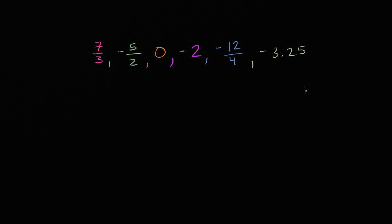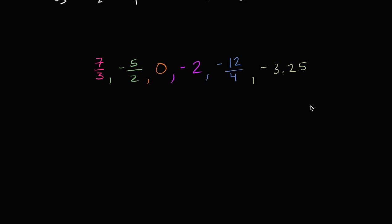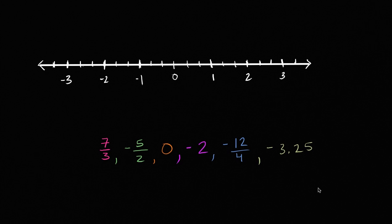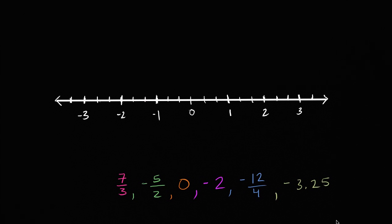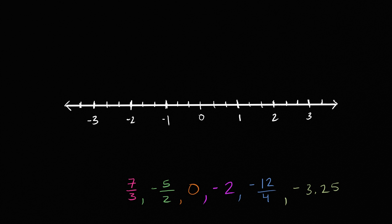So assuming you've had a go at it, let's do it together. And to help us there, let's plot these numbers on a number line. I have a number line up here, so there you go. There is a handy number line. And let's just take them one by one.